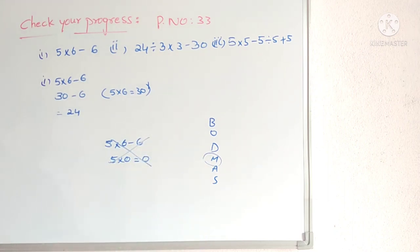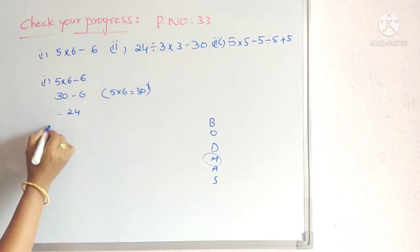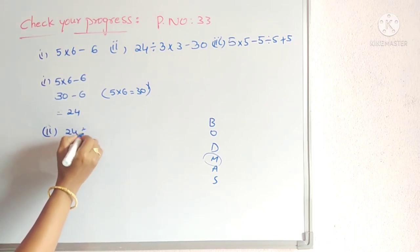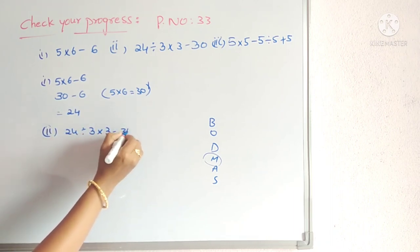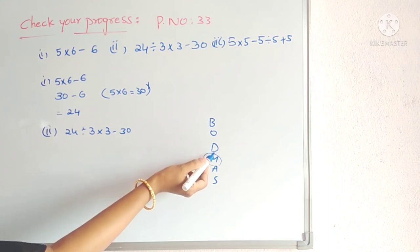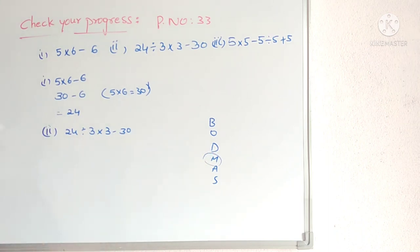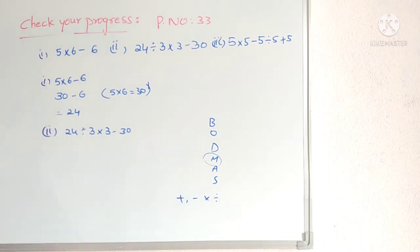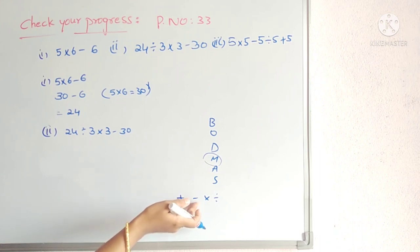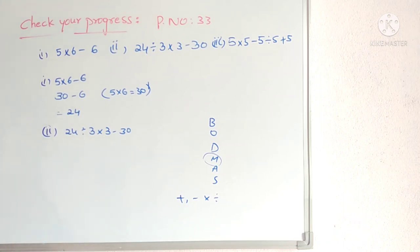Next, the second problem. Division, multiplication, and subtraction are there. By using BODMAS rule, first we have to perform division. There are four basic operations in mathematics: addition, subtraction, multiplication, and division. We normally learn addition first, but here first we have to do division.